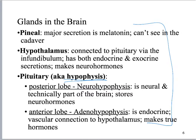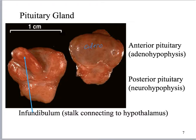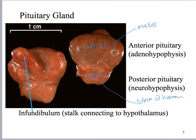Memorize absolutely everything on that note slide, including the fact that the pituitary can also be called the hypophysis. Here is a cadaver extraction of the pituitary gland. You have a very large adeno-hypophysis and a smaller neuro-hypophysis. The adeno-hypophysis is big because it makes a lot of hormones; the neuro-hypophysis is small because it only stores two hormones. The infundibulum connects it up to the hypothalamus.